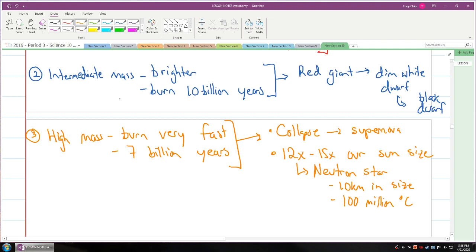When we say high mass, we're really talking about 12 times or more of our sun. When we're talking about intermediate, we're really talking about our sun.